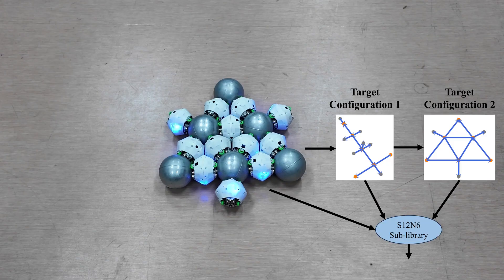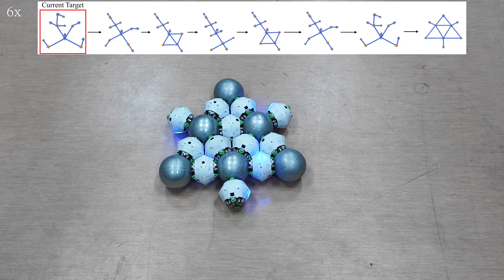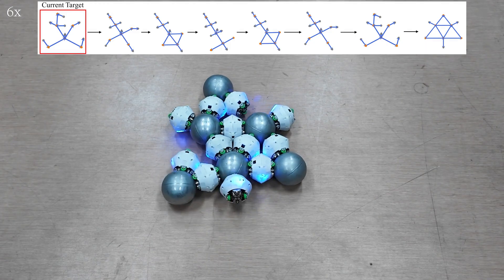The system is validated on the FreeSN system without external sensors, with up to 18 modules containing 48 joint motors, providing a foundation for high-level planning and control research in freeform modular robots.